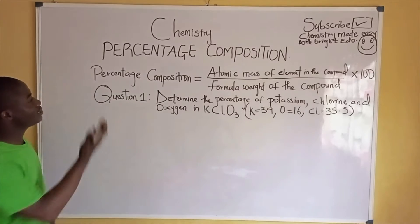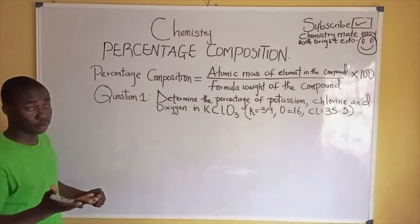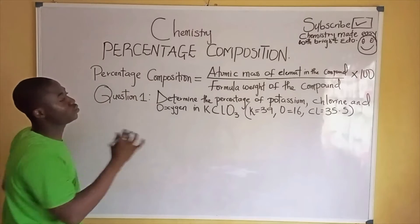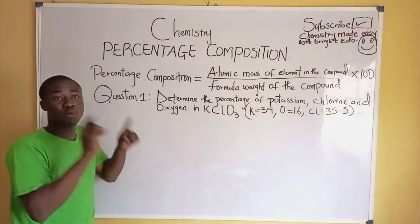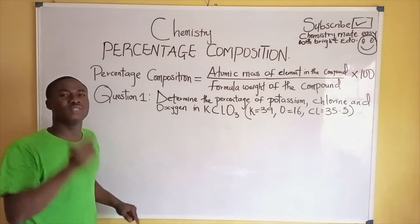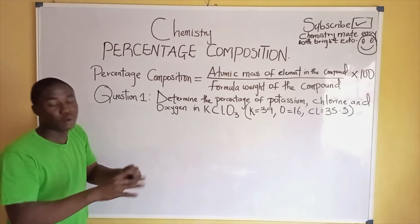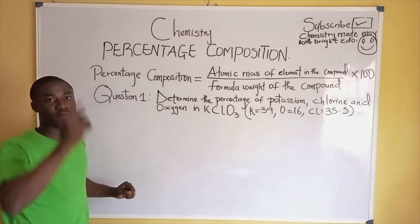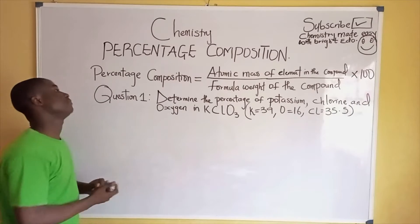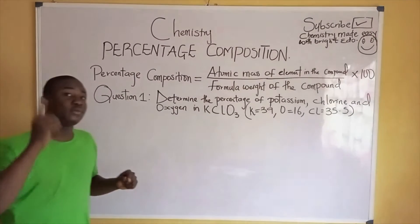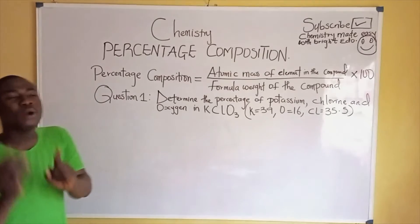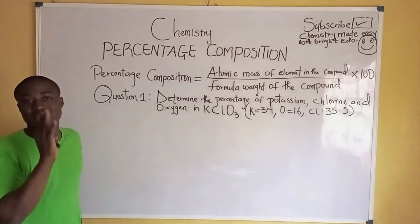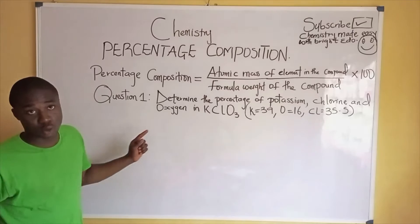You can see the formula written on the board. The formula says: percentage composition equals the atomic mass of the elements in the compound, divided by the formula weight of the compound, times 100. It should be noted that the formula weight of a compound is the same as the molar mass of that compound.